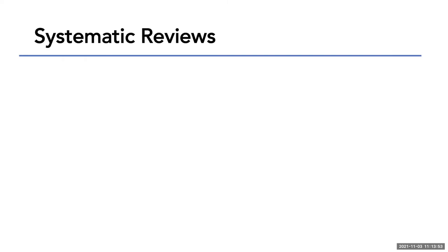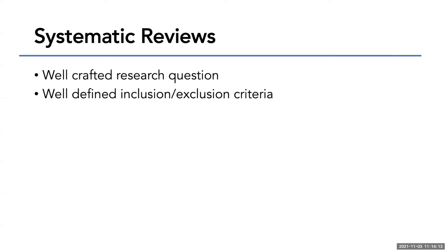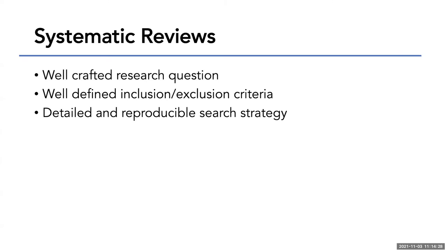Now let's go into a little more detail on systematic reviews, since it's what everyone wants to do — it's the cool thing. A systematic review requires a really well-crafted research question that tends to be very specific. They tend to be intervention-based: is one thing better than another? They also have well-defined inclusion and exclusion criteria — are you looking only at English language papers? Only randomized controlled trials? They require a very detailed and reproducible search strategy, and this is where librarians get involved. If you're working on a systematic review and don't have a librarian on your team, all librarians will be very judgy about your systematic review — we are the search experts. Always make sure you have a librarian on that dream team.